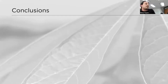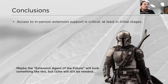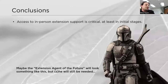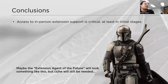To conclude: access to in-person extension support is really critical, at least in the initial stages. As a joke, the extension agent of the future might look like a robot — but the point is that the person on the ground will still be needed and will never be fully replaced by a digital service — at least that's what our data suggests.